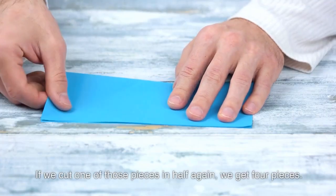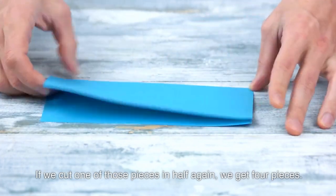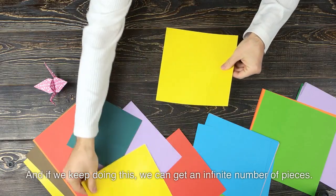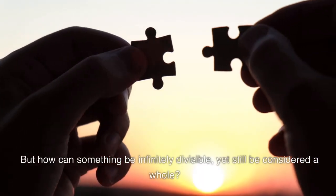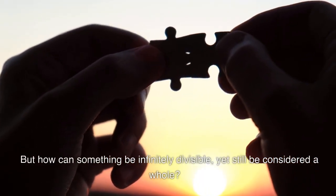If we cut one of those pieces in half again, we get four pieces. And if we keep doing this, we can get an infinite number of pieces. But how can something be infinitely divisible, yet still be considered a whole?